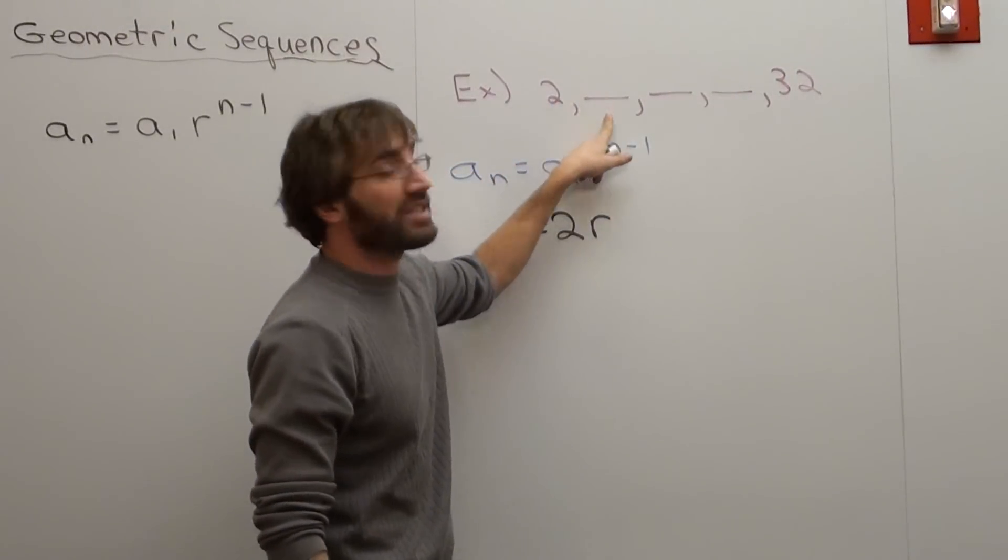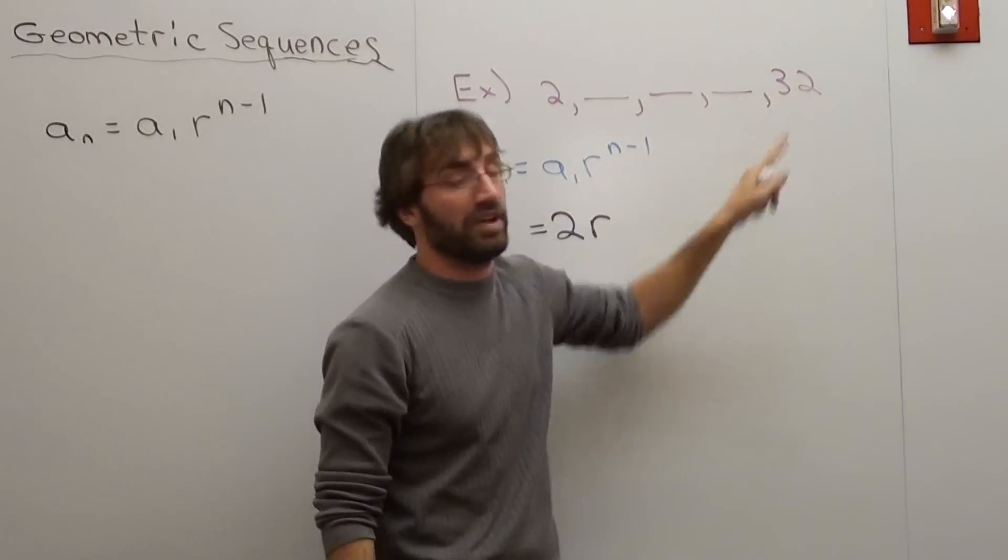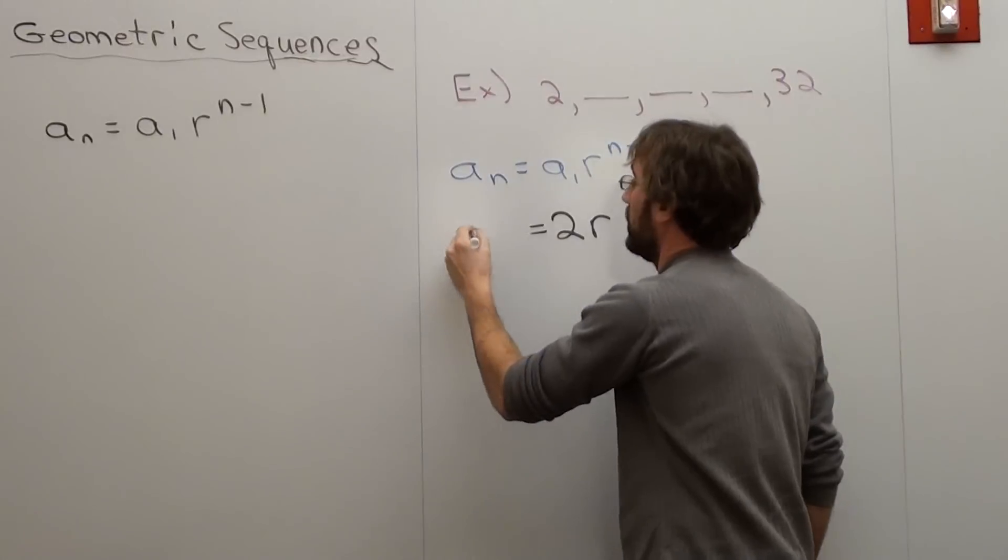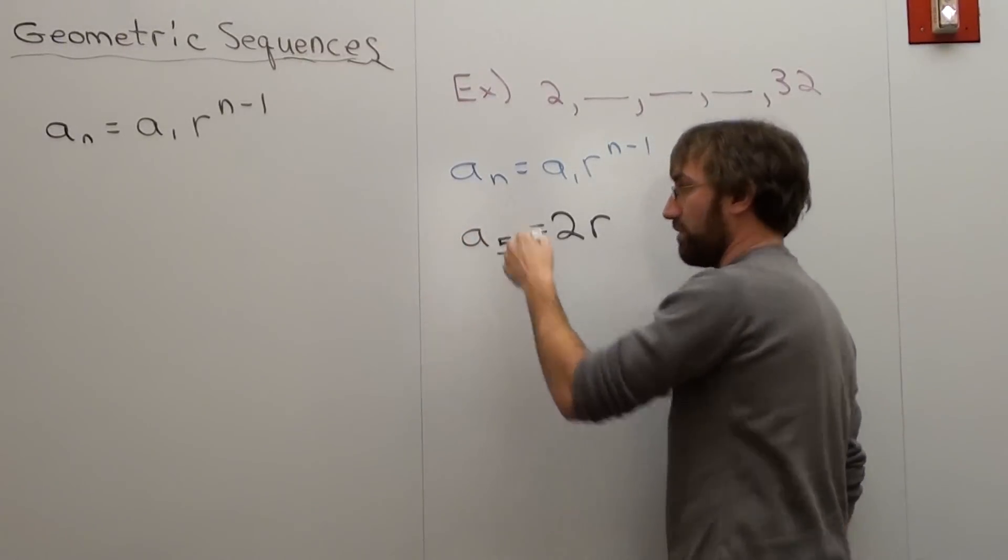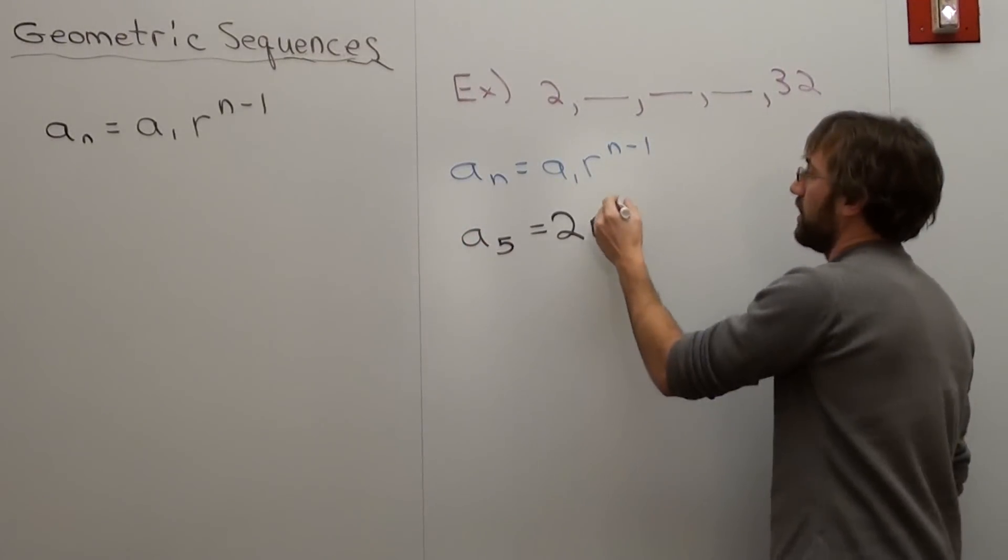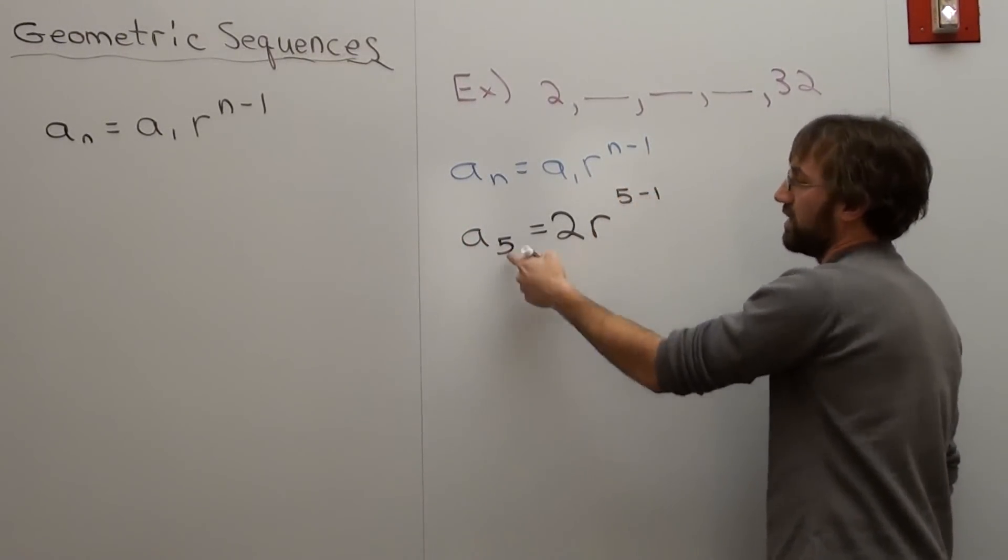I want to fill in something for my a sub n because it's going to make the problem so much easier if I do. I can't put in this term because that's my a sub 1. So I'm going to put in this term right here, 32. So that's my first, second, third, fourth, fifth a sub n. So it's actually a sub 5. That's what I'm going to substitute in for the n. So that's 5 minus 1 because my n was 5.